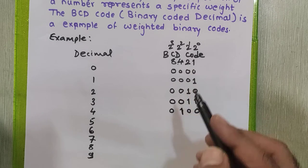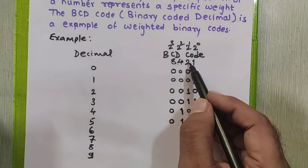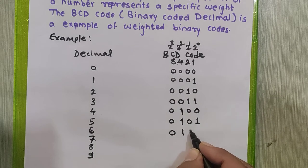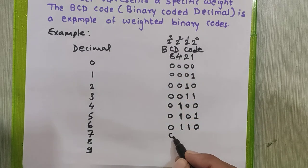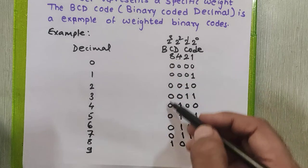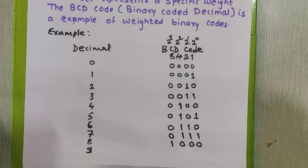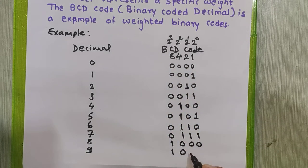5 is the combination of 4 plus 1, so it is 0101. 6 is 4 plus 2, represented as 0110. 7 is 4 plus 2 plus 1, last three bits are 1, so it is 0111. 8 is 1000 — the first bit represents 8. 9 is 8 plus 1, so the first and last bit are 1: 1001. So in the BCD number system we have represented all valid decimal digits 0 to 9 into binary code.